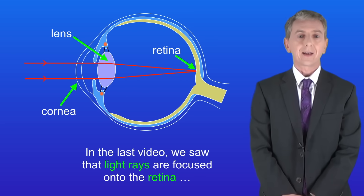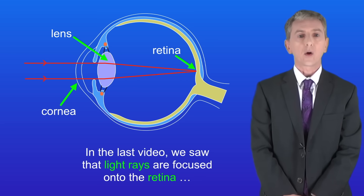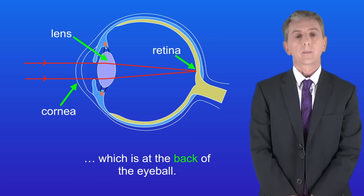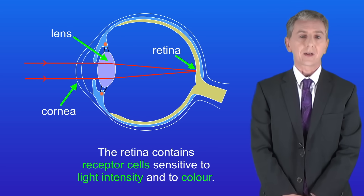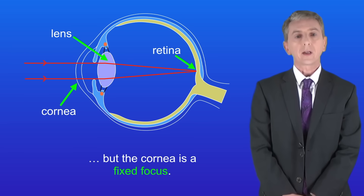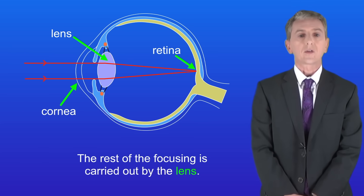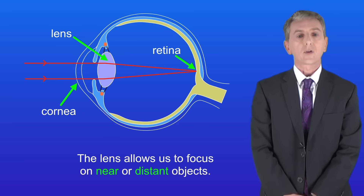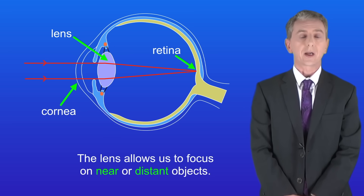In the last video we saw that light rays are focused onto the retina, which is at the back of the eyeball. The retina contains receptor cells sensitive to light intensity and to colour. A lot of the focusing is carried out by the cornea, but the cornea is a fixed focus. The rest of the focusing is carried out by the lens, which allows us to focus on near or distant objects.